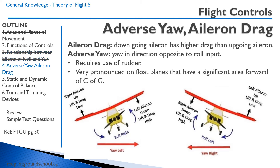When using the ailerons, you can run into a phenomenon called aileron drag. This occurs when the downgoing aileron has higher drag than the upgoing aileron. If we want to roll to the left and do a left turn, we move the yoke or stick to the left — the right aileron goes down and has more drag because it's in more of the airflow. So the plane will resist the turn to the left and potentially even yaw to the right. This is called adverse yaw, when the yaw goes in the direction opposite to the roll input. This is why we require the use of rudder to keep the turn coordinated.